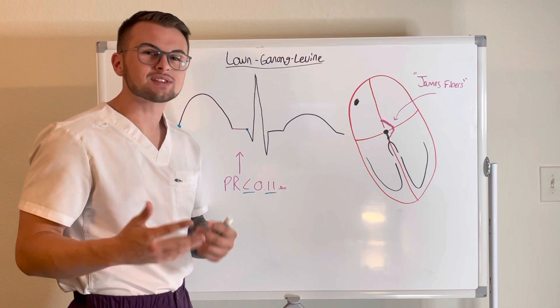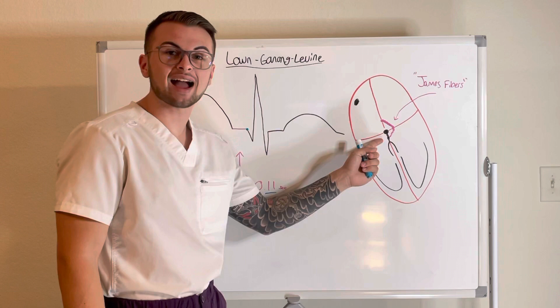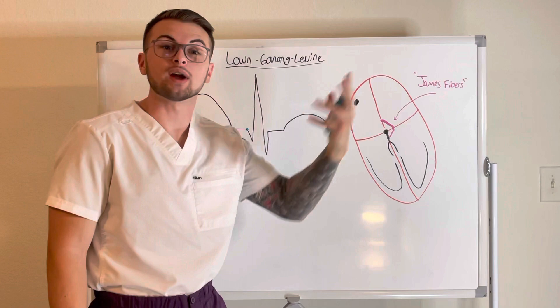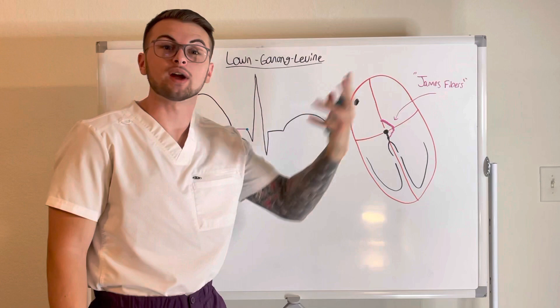So why do we have tachycardia? In LGL syndrome, patients don't have access to the normal AV node conduction delay. This puts them at greater risk for experiencing faster conduction from the atria to the ventricles, manifesting as tachycardia.